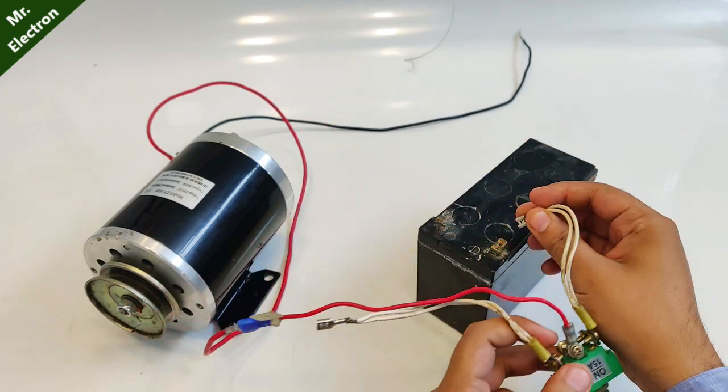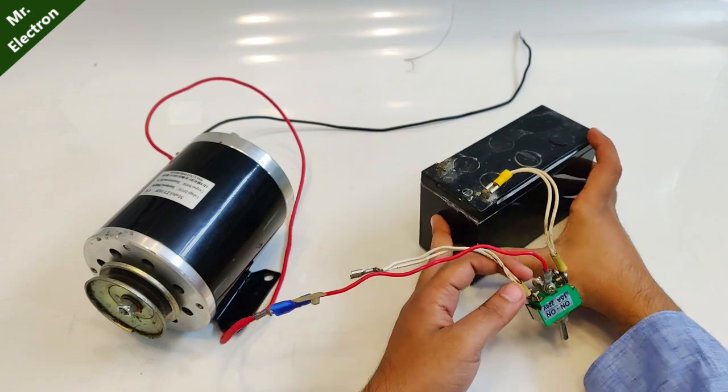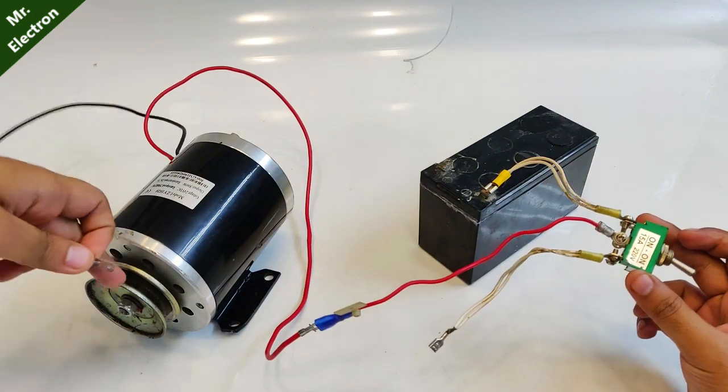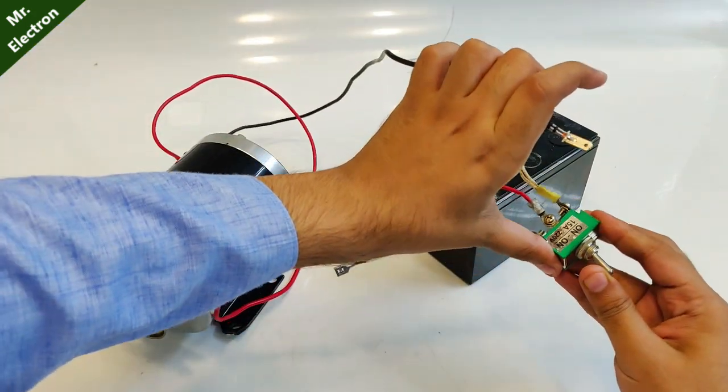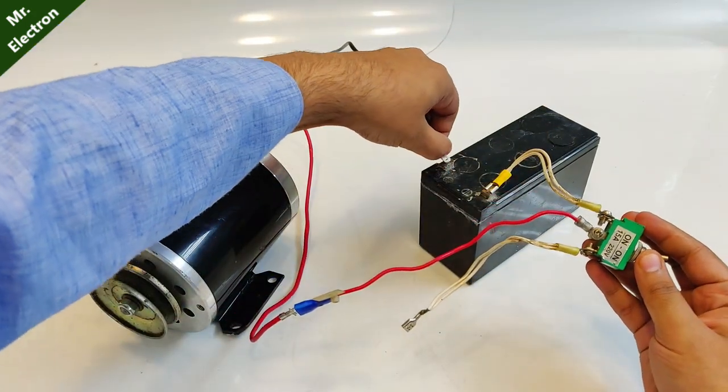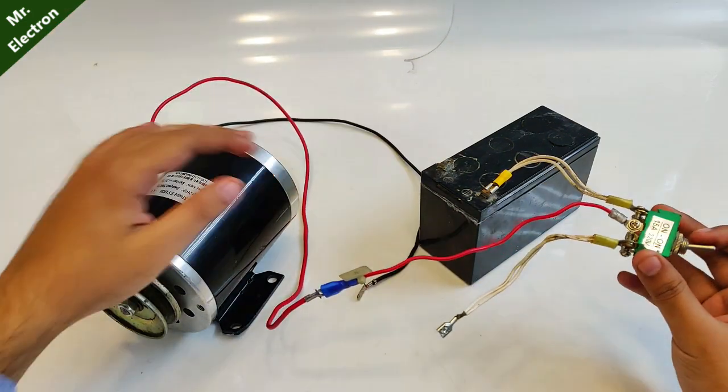Connect it to the battery, any terminal of the battery. Here I've connected it to the negative terminal of the battery. Now when I connect it, it will start running. Okay, you see. Now let's turn it off. You see, it is not running anymore. That's the simple switch function.